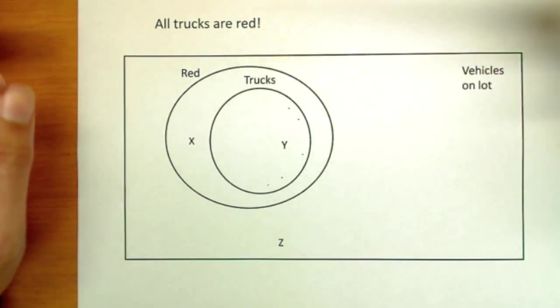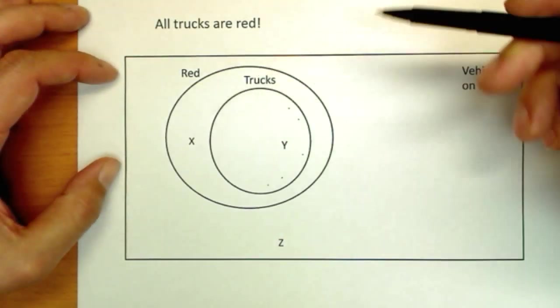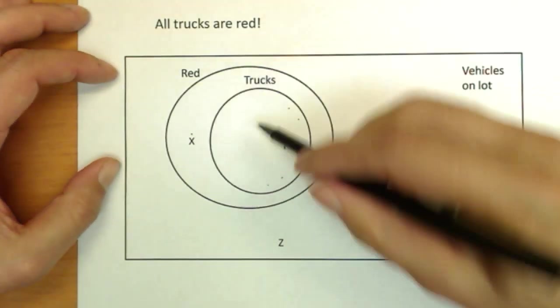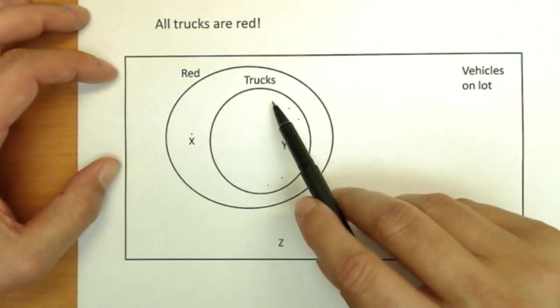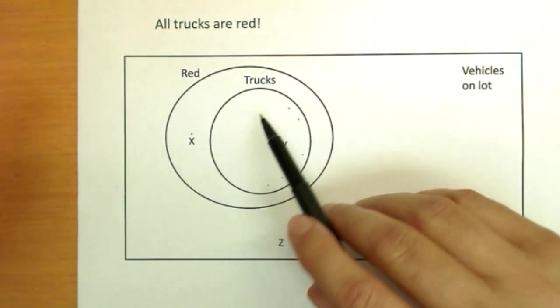Sometimes I'll get this interpreted wrong from students. I'll say everything red is a truck. Well, no, that's not the case. X here is red, and it's not inside the truck circle. So this is a red vehicle that's not a truck.